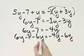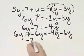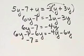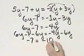What happens on the left side? The 6y's subtract out, and I have, be careful, it's negative 7 is equal to negative 4y minus 6y. That's negative 10y.